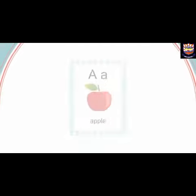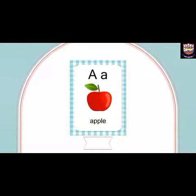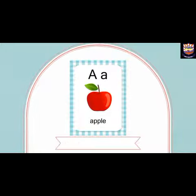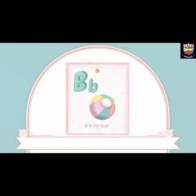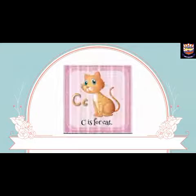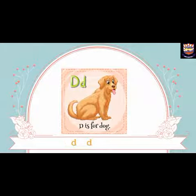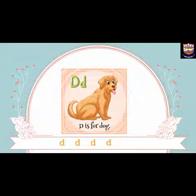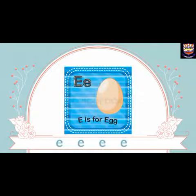Firstly, there is letter A. A is for apple — A, A, apple. B is for ball — B, B, ball. C is for cat — C, C, cat. D is for dog — D, D, dog. E is for egg — E, E, egg.